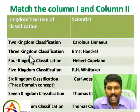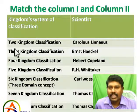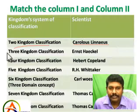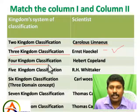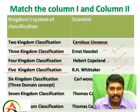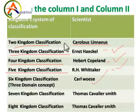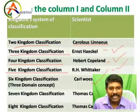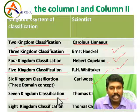In this video, you can see a glance of all systems. Two kingdom concept: Carolus Linnaeus, artificial system of nomenclature. Three kingdom classification: Ernst Haeckel. Four kingdom concept: Herbert Copeland. Five kingdom concept: R.H. Whittaker. Six kingdom classification and three domain concept: Carl Woese. Seven and eight kingdom concept: Thomas Cavalier-Smith.